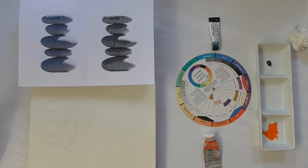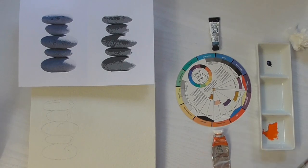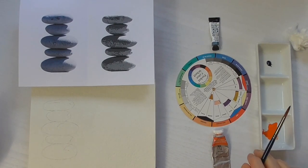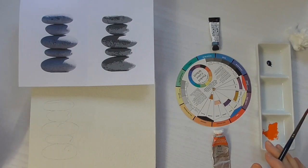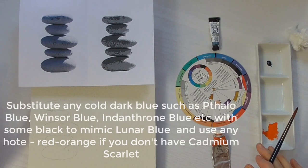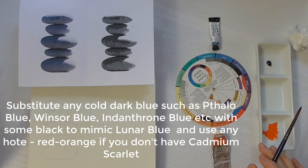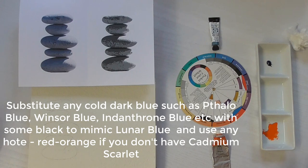We've got Lunar Blue by Daniel Smith and Cadmium Scarlet by Winsor & Newton. If you haven't got Lunar Blue, you can make a close approximate by mixing any cold dark blue such as Phthalo Blue or Winsor Blue and putting a speck of black in it. If you haven't got Cadmium Scarlet, you can use any reddish orange.